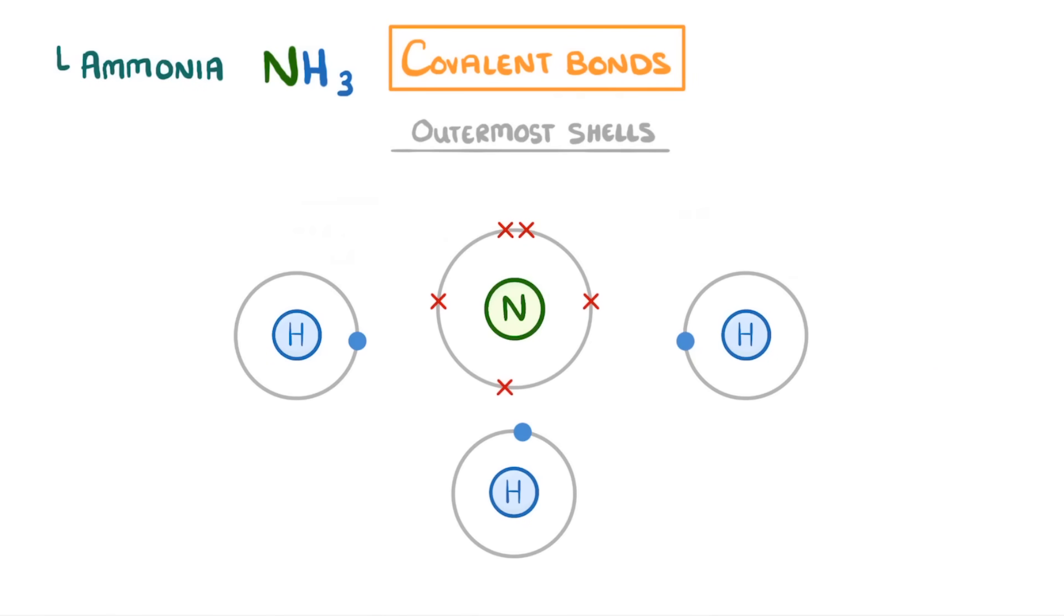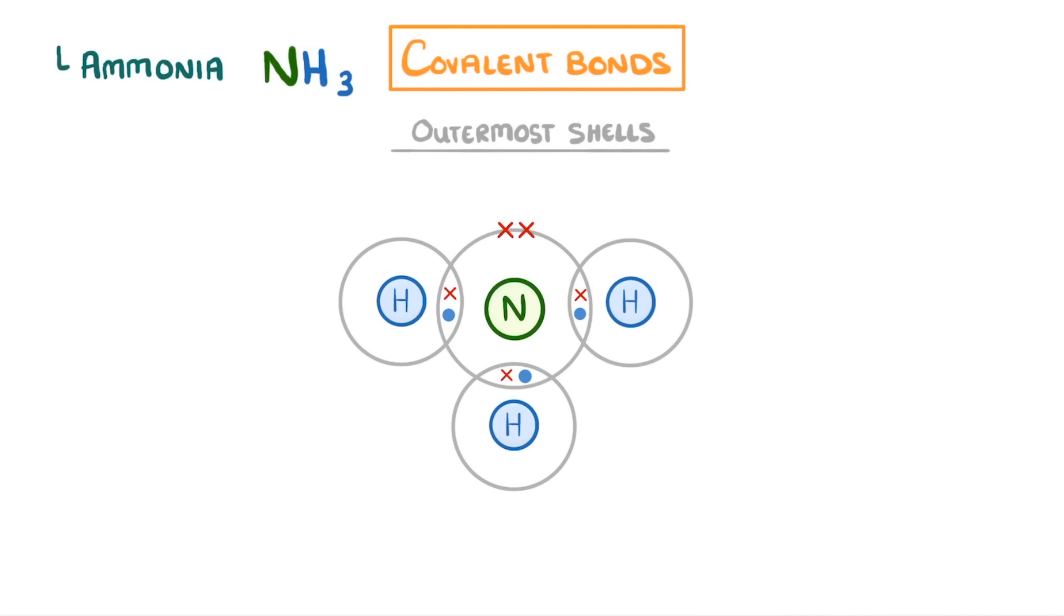So if each hydrogen shared 1 electron with the nitrogen, then all of the atoms would have full outer shells, and that would be our dot and cross diagram all done.